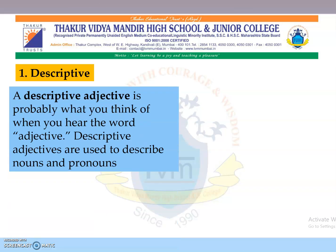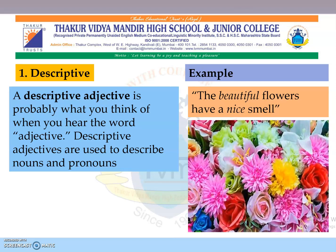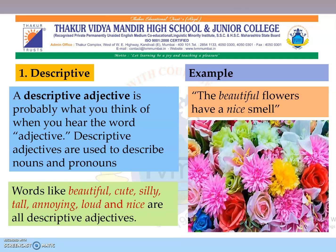A descriptive adjective is probably what you think of when you hear the word adjective. Descriptive adjectives are used to describe nouns and pronouns. For example: the beautiful flowers have a nice smell. Look at the words beautiful and nice — they are adjectives. Words like beautiful, cute, silly, tall, annoying, loud and nice are all descriptive adjectives.